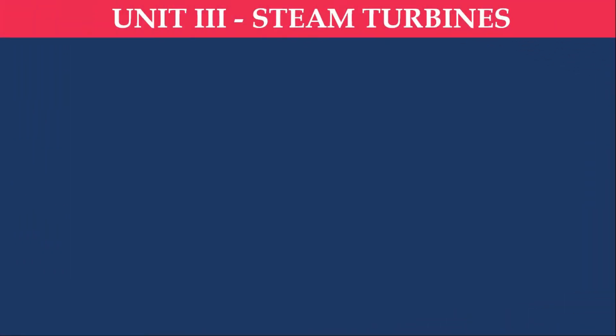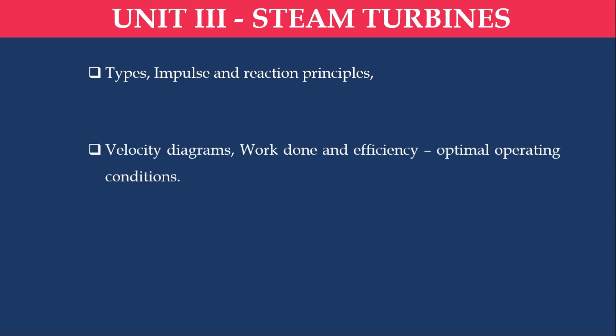The next unit is Unit 3: Steam Turbine. We have covered steam nozzle and boiler, now steam turbine. In this unit we will study types of steam turbines — impulse or reaction — and their differences. Very importantly, we will draw velocity diagrams for steam turbine blades and find out the work output and efficiency, and how to optimize them.